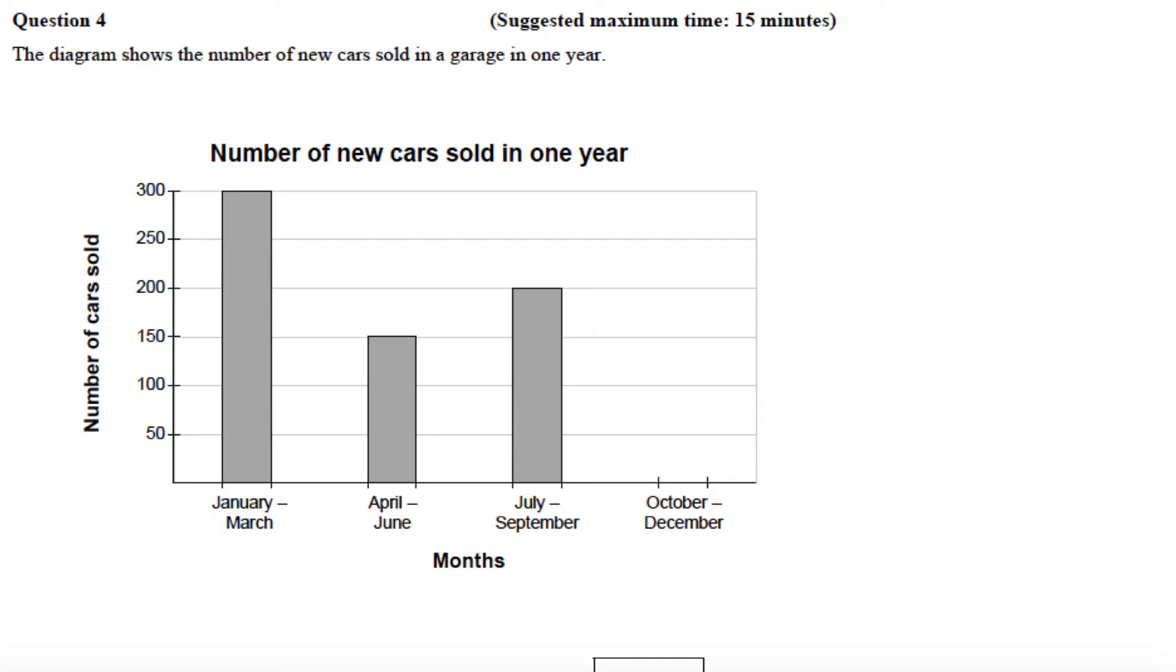So this is question 4 from the Junior Cert Ordinary Level Paper 2 in 2015. The question says the diagram shows the number of new cars sold in a garage in one year. So here we have our diagram. We've got the months across the bottom and then we've the number of cars sold up the vertical axis.